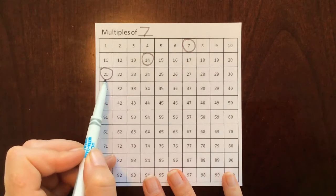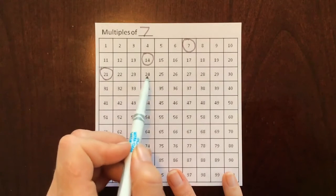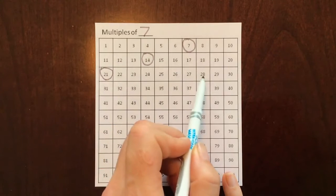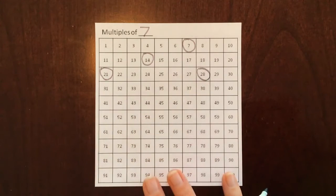Okay, I'll stay here and you count another multiple of seven. Go. Okay, one, two, three, four, five, six, seven. Did you land on 28? Awesome.